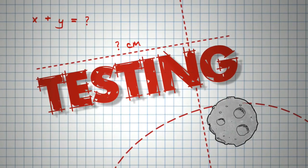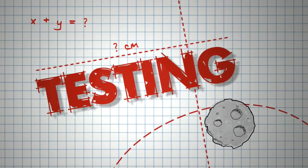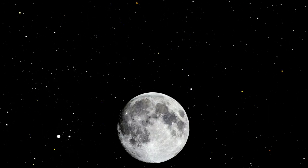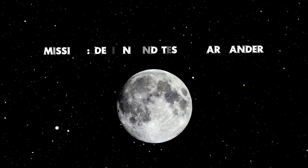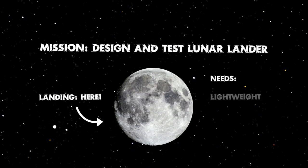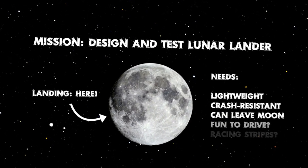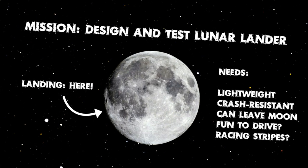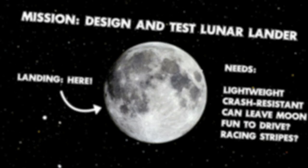Before we start testing though, we should make sure we know a little bit about our mission. That way, we can figure out what we're testing as well as what we're allowed to do to improve it. These are called constraints.